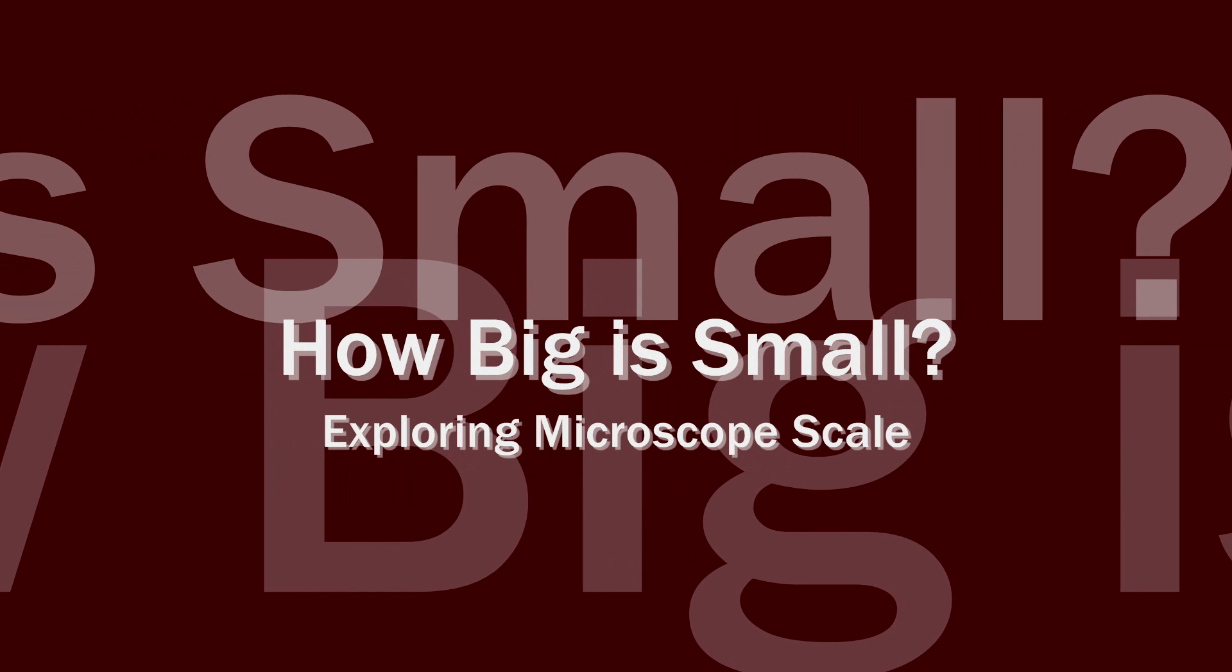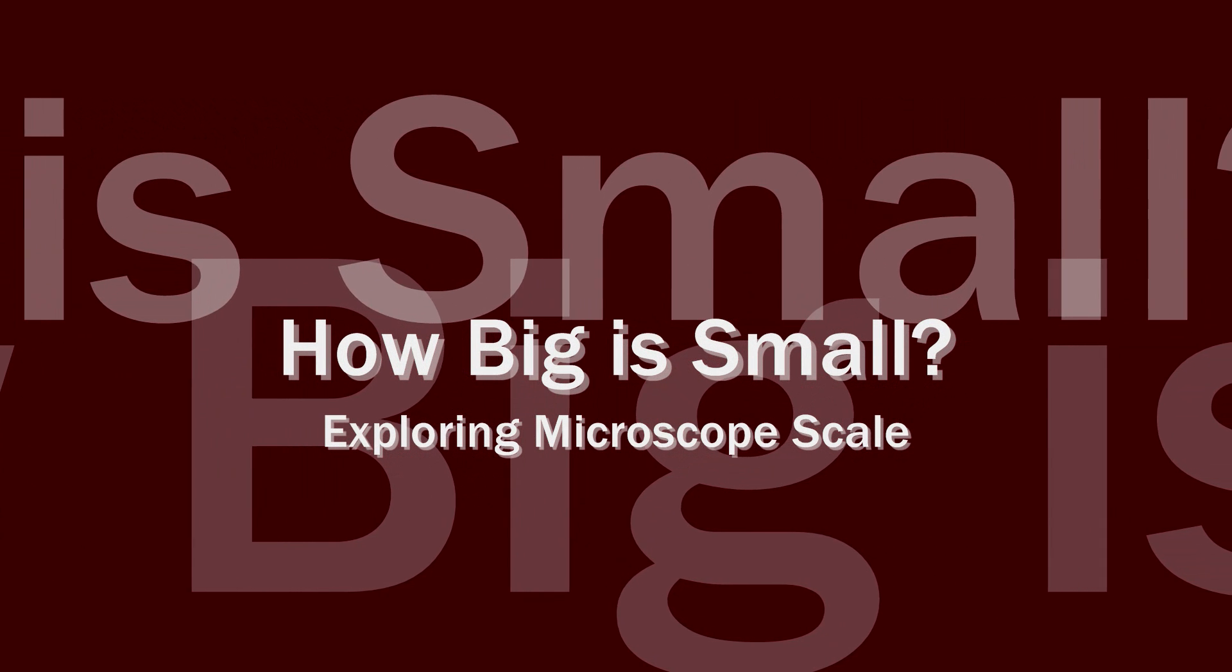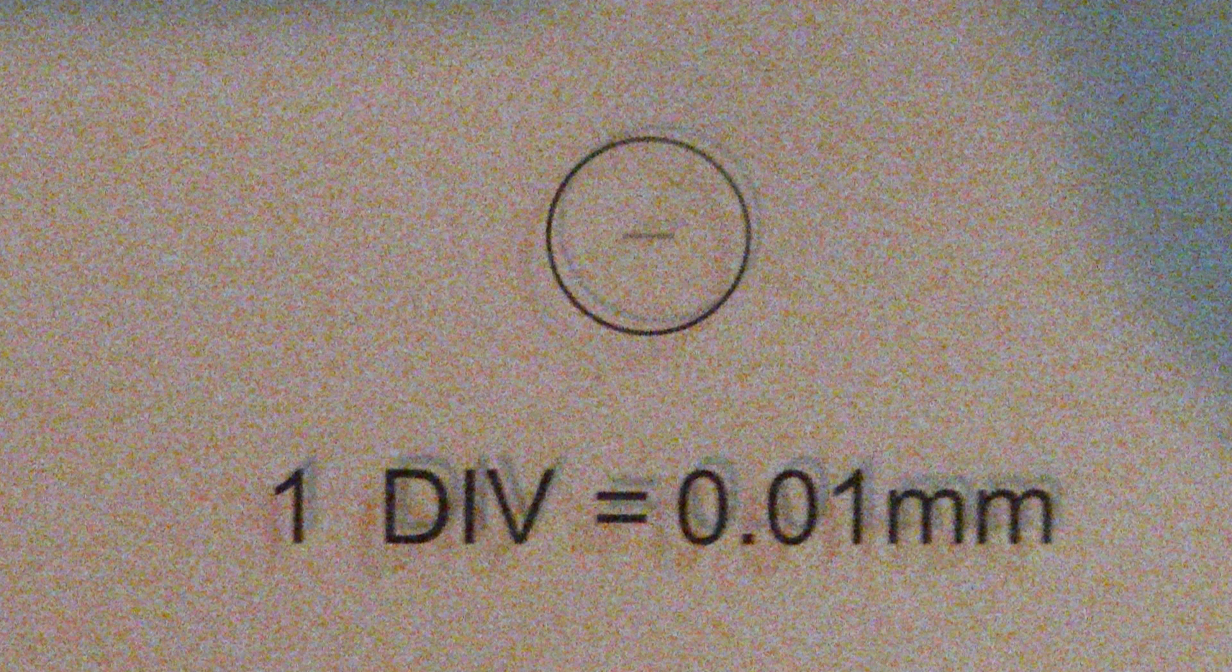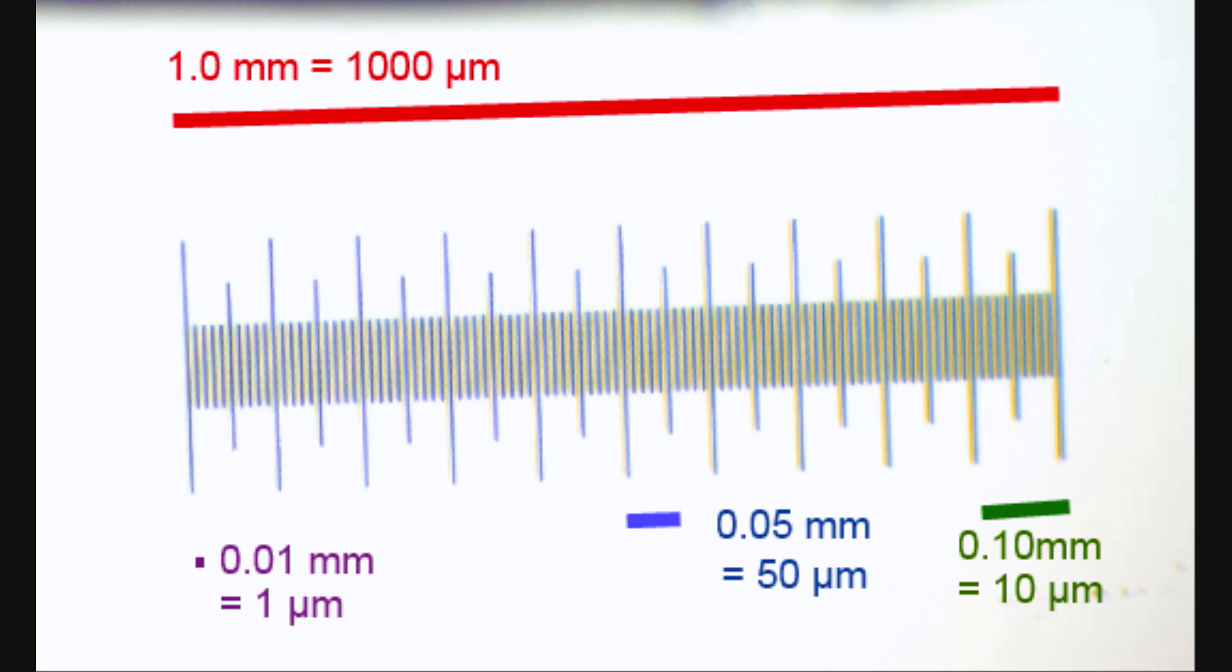In this video, I'm going to be looking at fairly common things under my microscope in order to help generate a sense of relative scales. For this, I'm going to be using a special calibration slide that has tiny divisions on it, as small as 0.01 mm, or 1 micrometer.